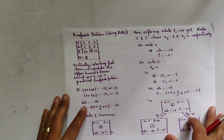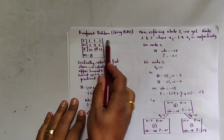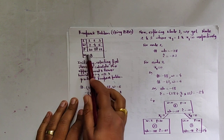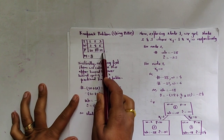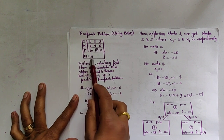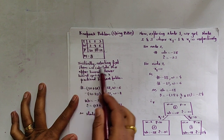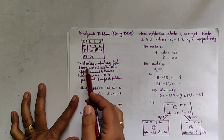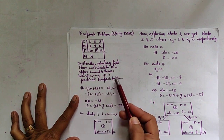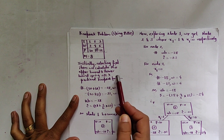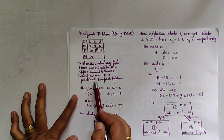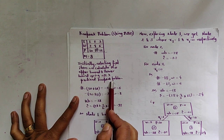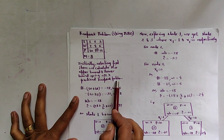Let us consider a knapsack problem with 3 items having weights 2, 4, 6 and profits 10, 18, and 12, with a capacity of 8. Initially, for finding the upper bound and lower bound we select the first item and calculate both bounds. The upper bound is calculated using the 0/1 knapsack problem and the lower bound is calculated using the fractional knapsack problem.